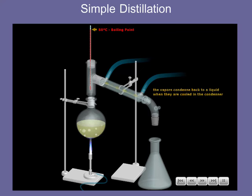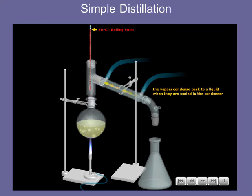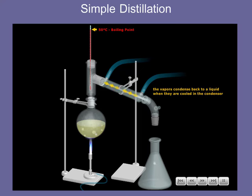As the vapors travel into the condenser, they will be cooled and will liquefy. The liquid droplets, called the distillate, run down the condenser and are collected in a receiving flask.